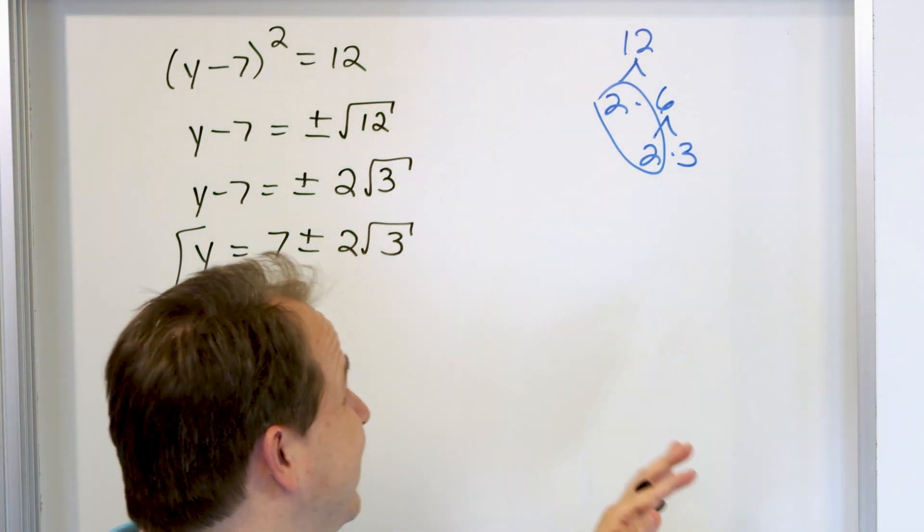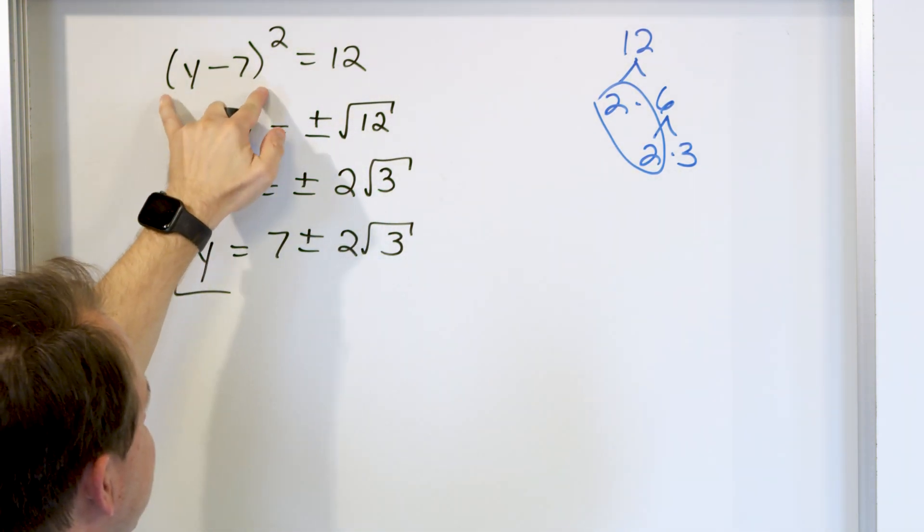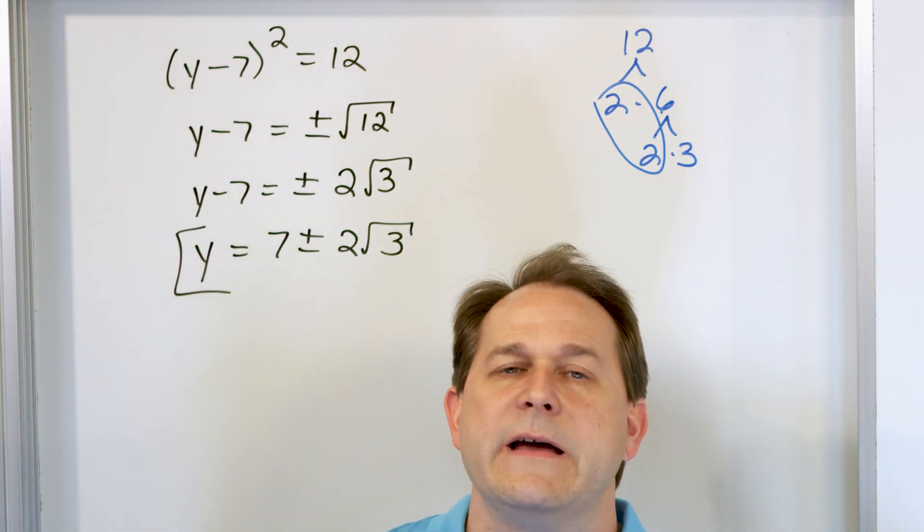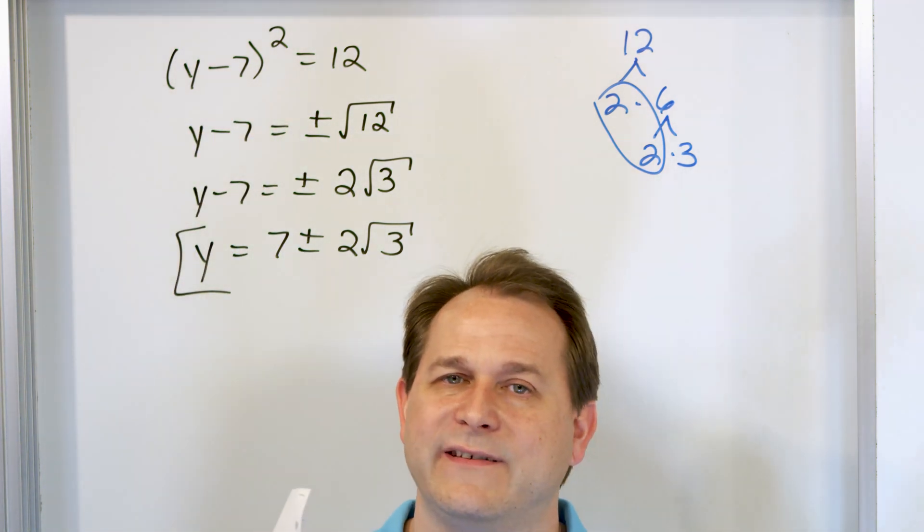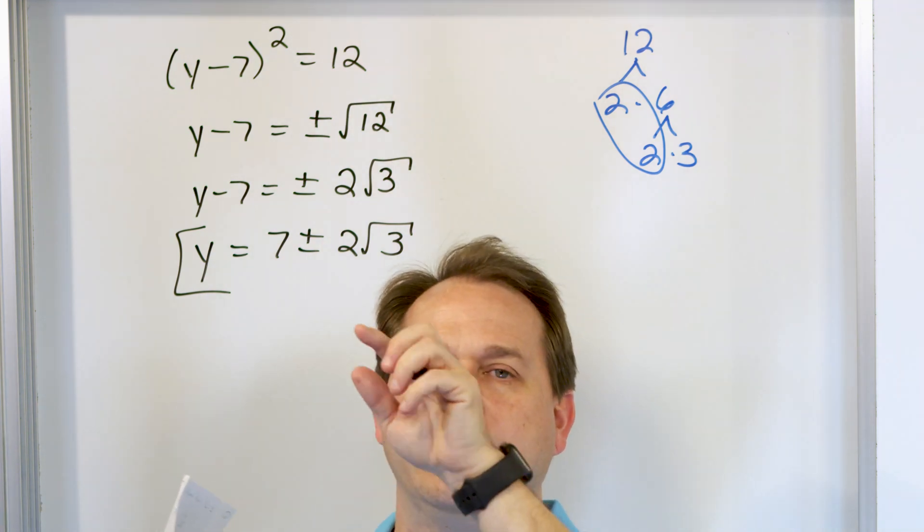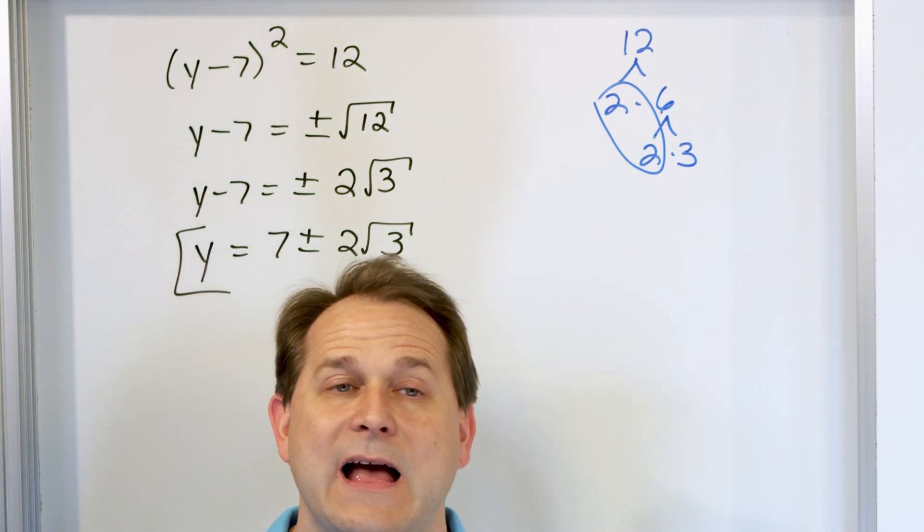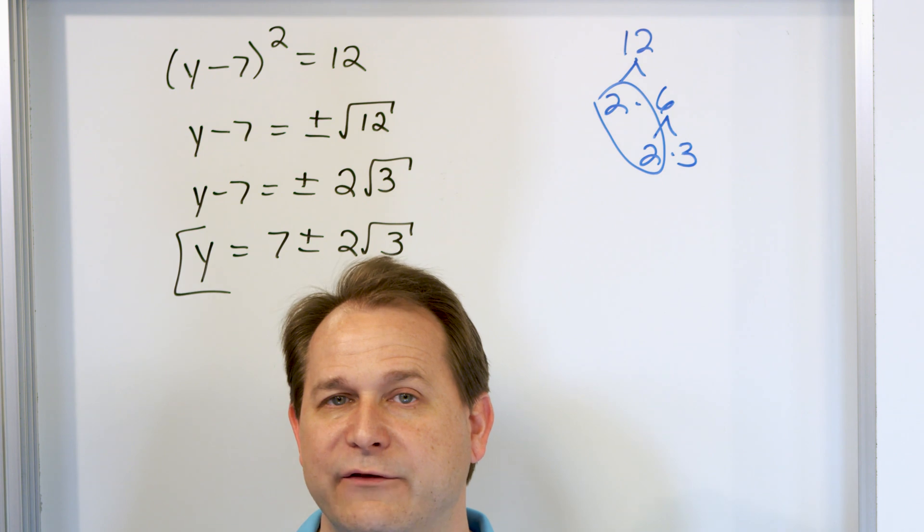So if I were to plot this function that represents this equation here, if I were to plot this minus the 12, that's the function on one side all by itself, then I would be setting that function equal to 0, which is the crossing points. And the crossing points are going to be in two real locations because we have real numbers for the answers. So this equation, if I were to graph it, actually does cross the axis in two places.